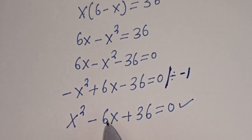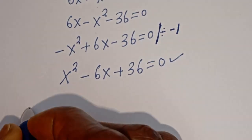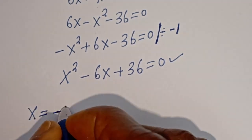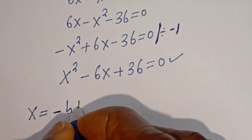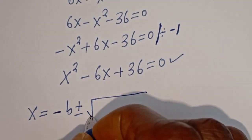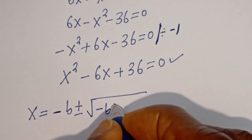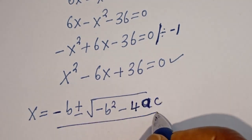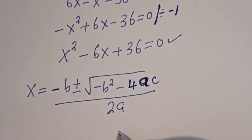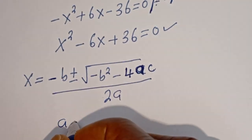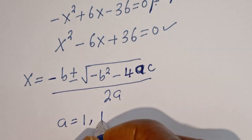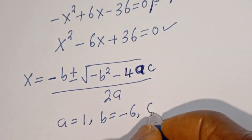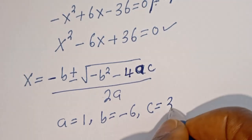We can solve this using the quadratic general formula. The quadratic general formula is given as s is equal to negative b plus or minus square root of b squared minus 4ac, divided by 2a. Then where a is equal to 1, b is equal to negative 6, and c is equal to 36.